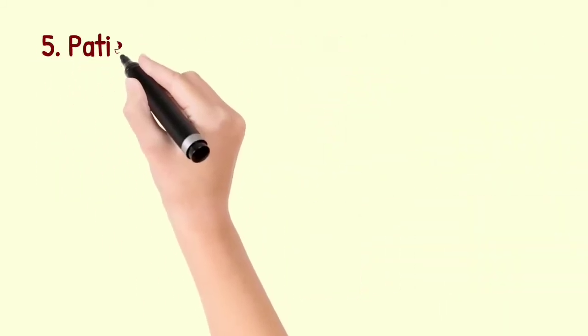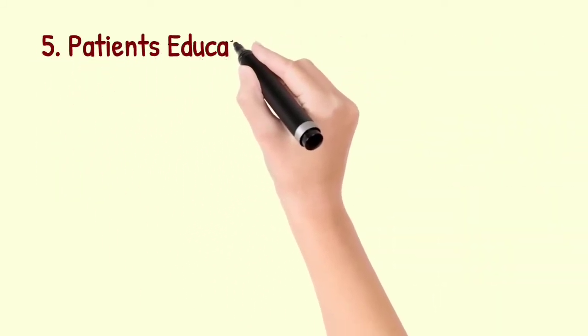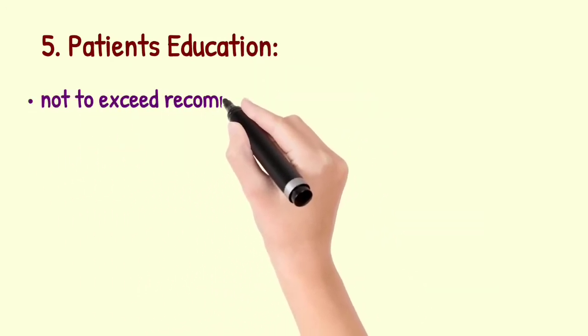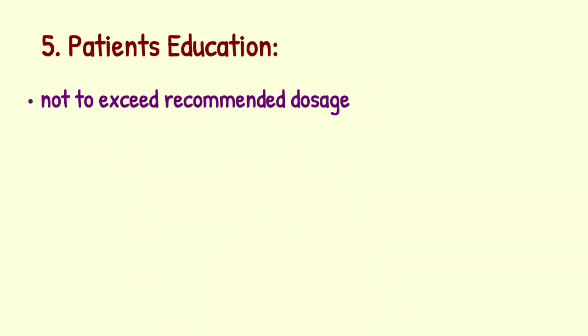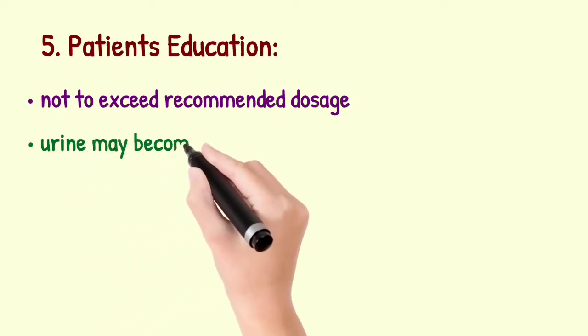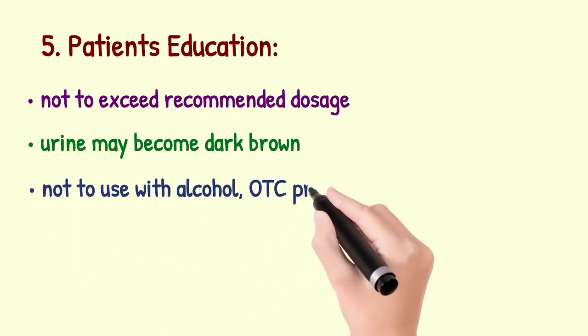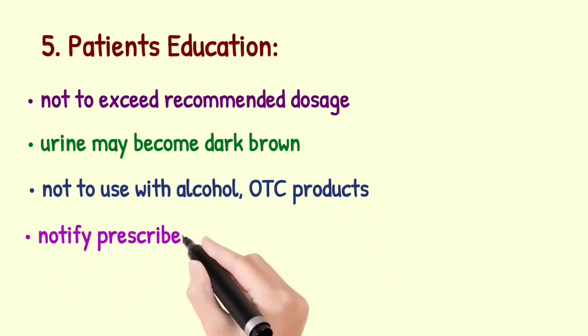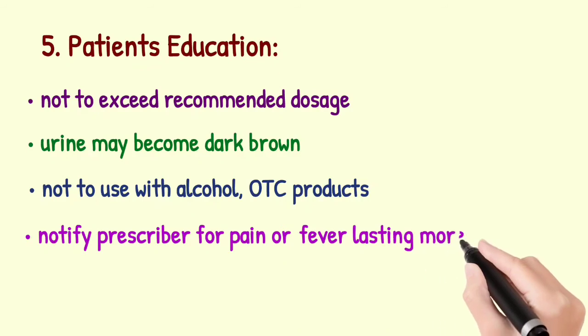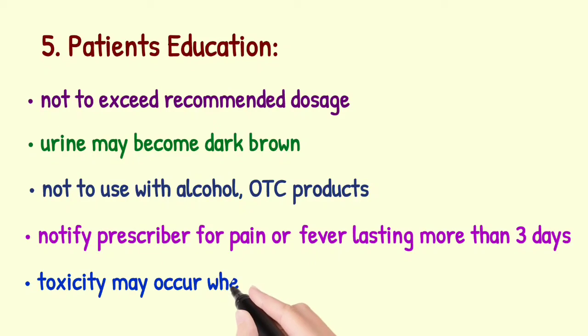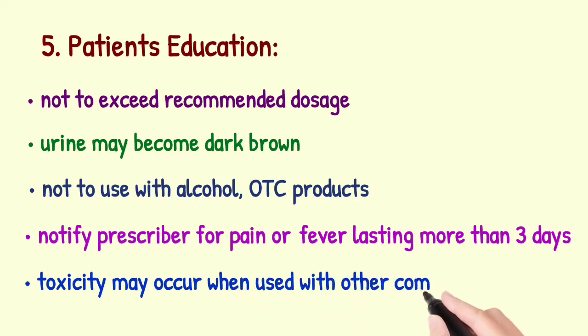We need to know some patient education. First, teach the patient not to exceed recommended dosage. Then inform the patient that urine may become dark brown color as a result of phenacetin. Then advise the patient not to use with alcohol and OTC products. Then tell the patient to notify prescriber for pain or fever lasting more than 3 days. And also inform the patient that toxicity may occur when used with other combination products.